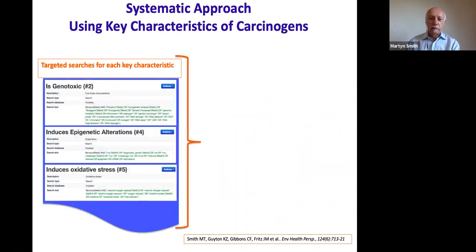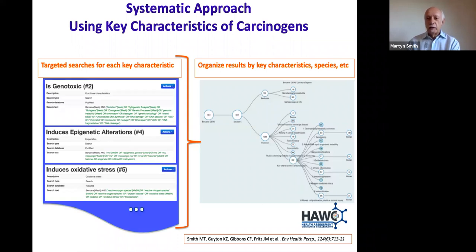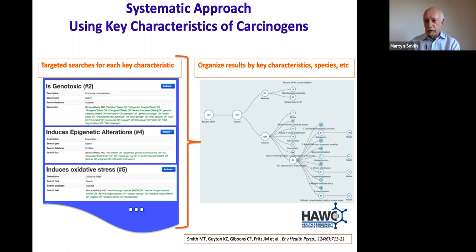We want to have procedures that people can follow to think about whether evidence is strong, weak, or moderate, and how we avoid the bias I spoke of earlier. We've developed a set of keywords and MeSH terms — currently being revised and expanded by Luoping Zhang and Kate Guyton. You can then put those into an organizing program such as HAWC (an open IARC software) or other systems like CISREV, which uses AI to organize these things. This allows you to look at the relevant literature — for example, 1,900 papers for benzene — sort them by key characteristic, and assign subgroups of two or three people to review and make decisions quite efficiently.